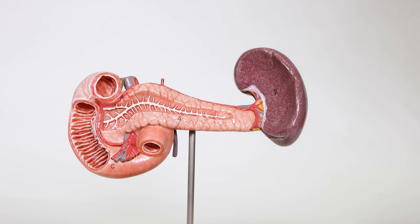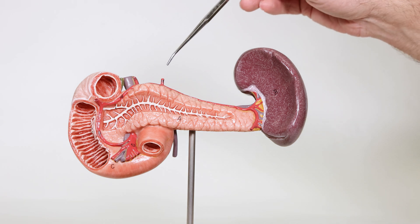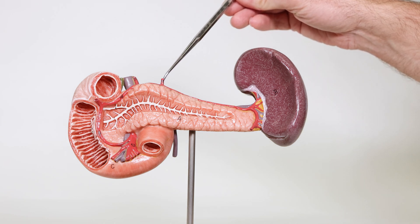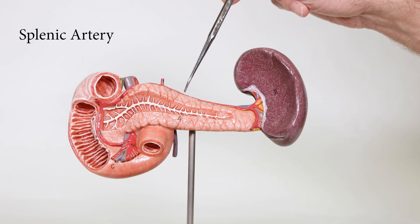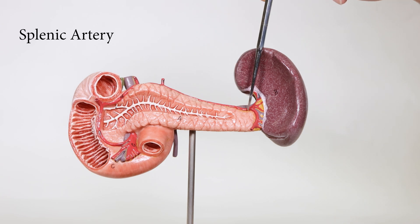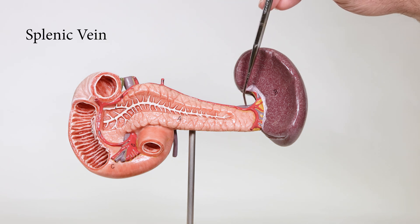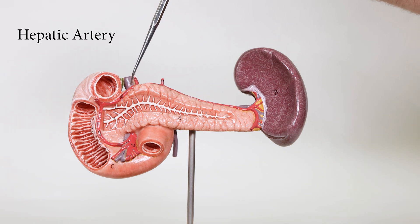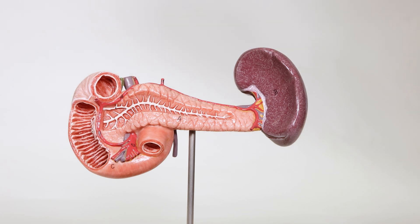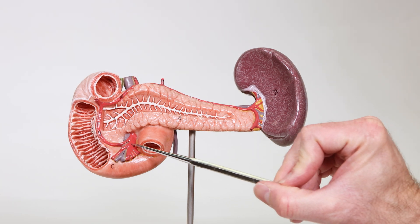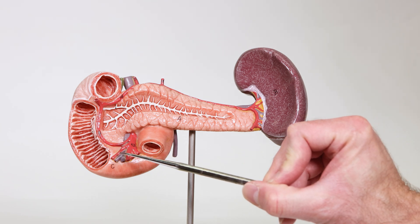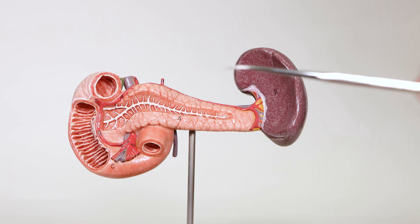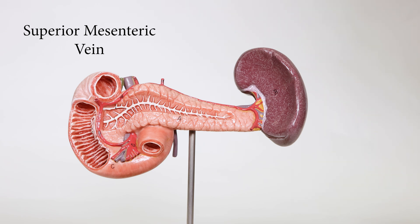As far as blood vessels go, you can see up top here is the celiac trunk coming into the splenic artery — the red one — coming around. You can see a little bit of the splenic vein here, and the hepatic artery over here. Going down, you can see the superior mesenteric artery, with the blue right next to it being the superior mesenteric vein.